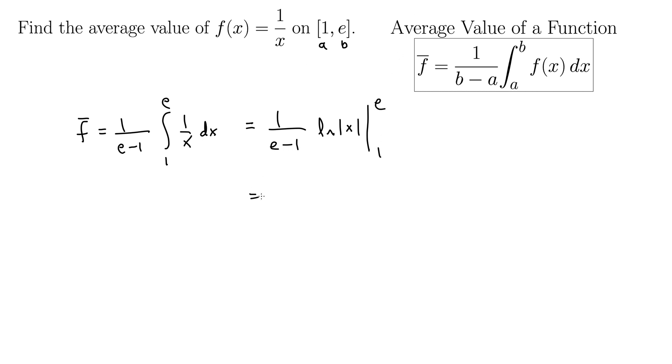Okay, so I'll just leave this 1 over e minus 1 hanging out in the front here times natural log e, we don't need the absolute value there, minus natural log 1. We also don't need the absolute value there. But we know that the natural log of e is 1, the natural log of 1 is 0. So this whole thing comes down to simply 1 over e minus 1.